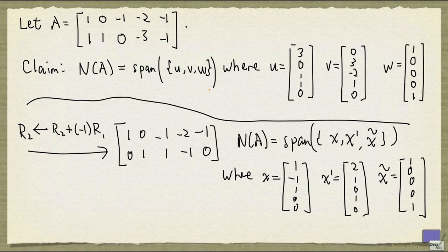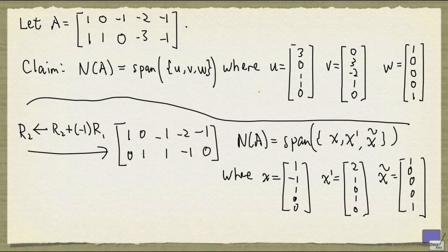then we have proved the result because any linear combination of x, x prime, and x tilde will become linear combinations of u, v, and w. And that is simply, after simplification, a linear combination of u, v, and w.